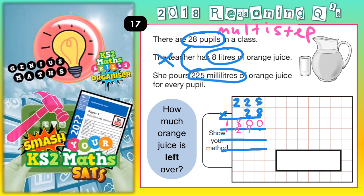Now we need to multiply by this 2 here. But remember, this 2 doesn't mean 2 — it means 20. So we put our magic 0 in. It's always a good idea to scribble out the carry digits because we've already used those and don't need them again. So we multiply by 20 and put our magic 0 in.